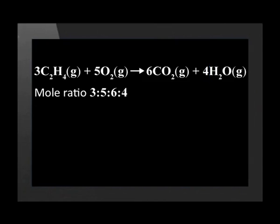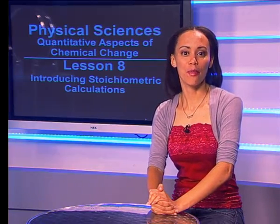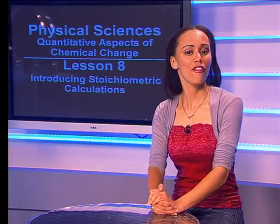Stoichiometry shows us that the ratio is 3 to 5 to 6 to 4 from the balanced equation. This is called the mole ratio. The mole ratio gives the relative proportions of each reactant and product that are present.